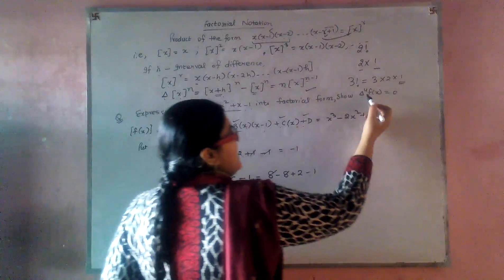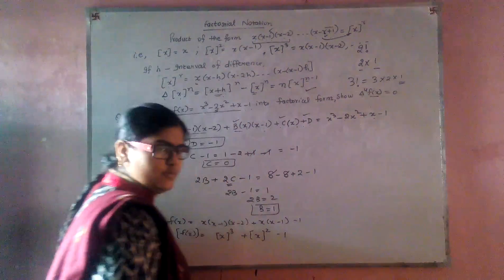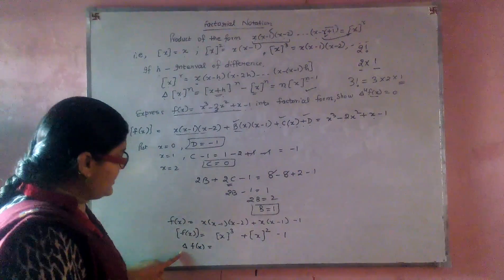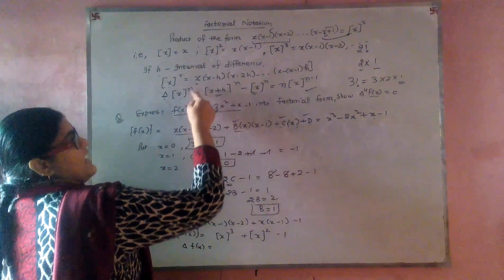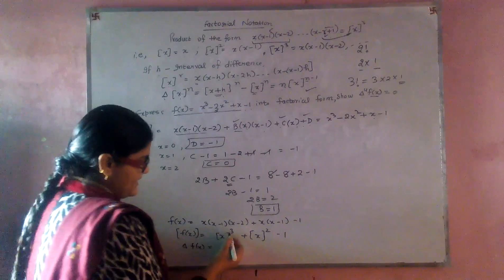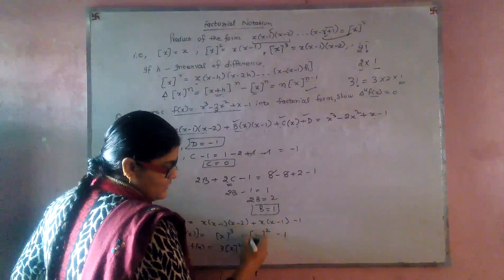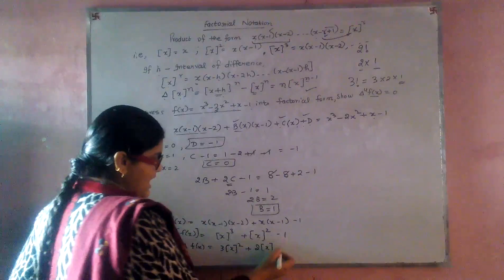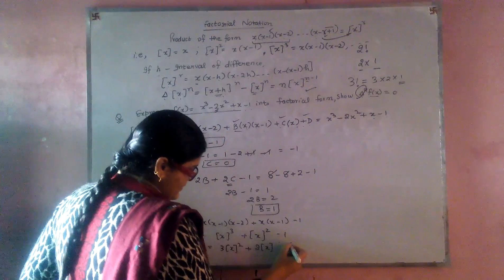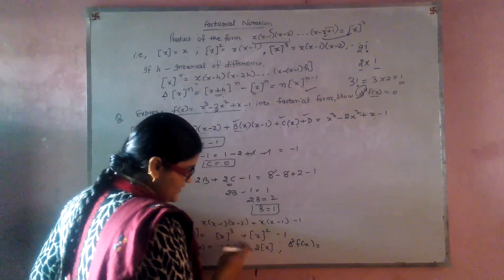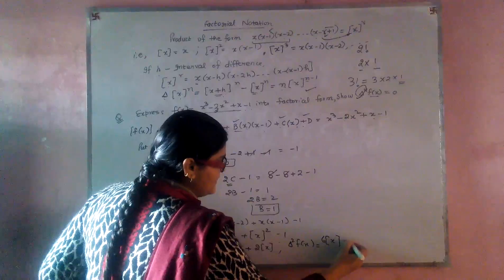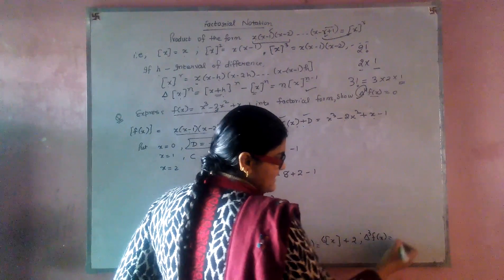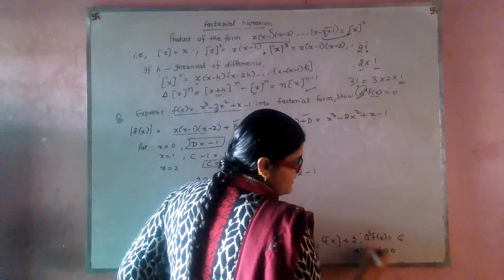Now we have to show the forward difference operator up to 4 for f(x) equals 0. Taking the forward operator of f(x), using x raised to power n becomes this, it gives 3x squared plus 2. Taking the forward operator again leads to degree being reduced. Lambda squared of f(x) becomes 3 times 6, factorial notation of x, plus 2. Applying the operator up to the 4th time, the factorial notation up to 3 terms becomes 6, and then it becomes 0.